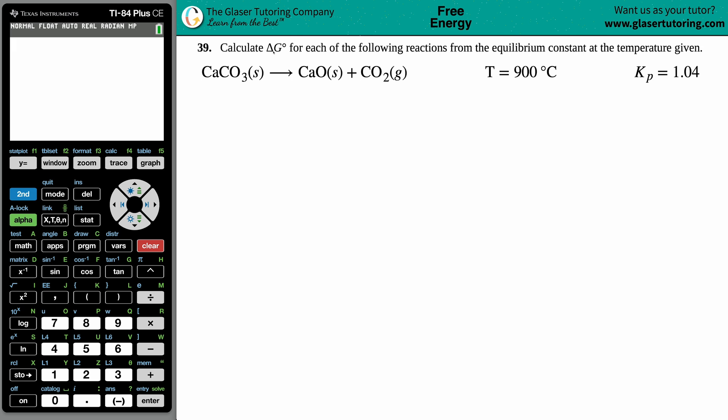Number 39: Calculate the delta G° for each of the following reactions from the equilibrium constant at the temperature given. In this case we have calcium carbonate, CaCO₃ solid, which will yield calcium oxide, CaO solid, plus carbon dioxide gas, CO₂. They gave us a temperature of 900 degrees Celsius and a Kp of 1.04.